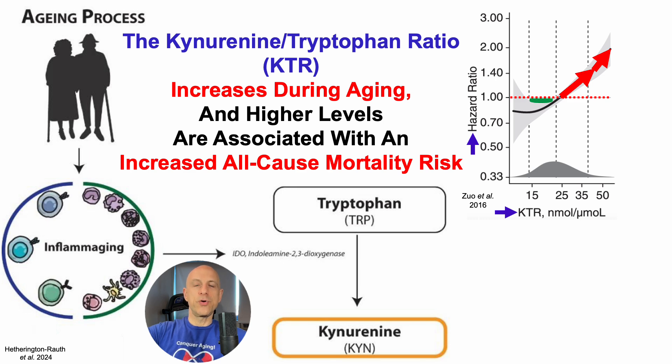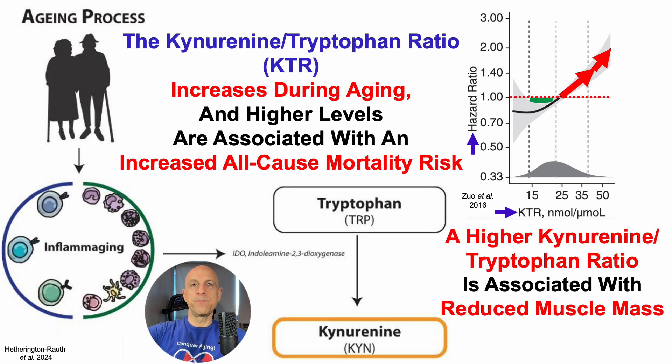But the kynurenine to tryptophan ratio isn't just associated with aging and all-cause mortality risk — it's also associated with reduced muscle mass.